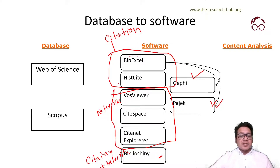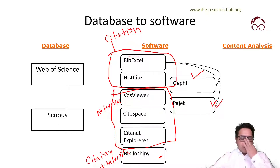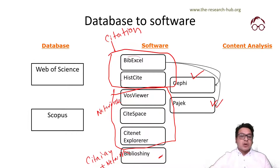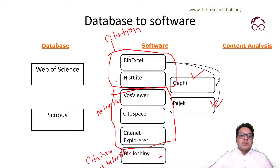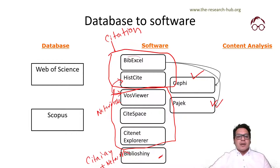HisCite offers some visualization of co-citation matrices using a tool called GraphMaker, but that's not really good quality so I wouldn't recommend using it anymore. If you want to use HisCite, one good idea would be to combine them — do the citation analysis in HisCite and the network analysis in VosViewer, or combine HisCite with Citespace or another software.